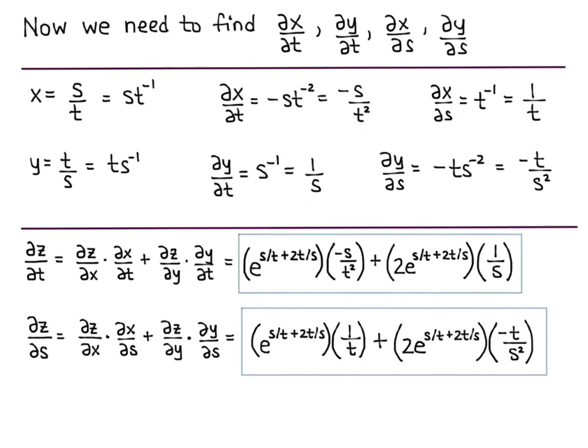And we're done. Just be sure to take all of the partial derivatives before putting everything together with the definition. Also, notice that the only variables in the final answer are s and t — the two independent variables. If you end up with an x or y in your answer, then you're not done. Now you've seen case 1 and case 2 of the chain rule for functions of two variables, and we can generalize this to functions of many variables.